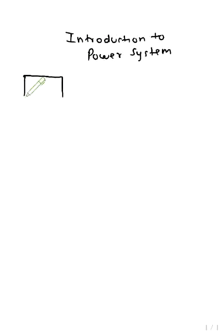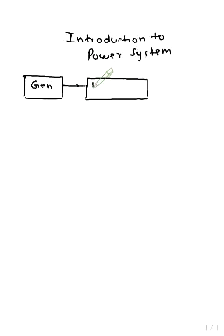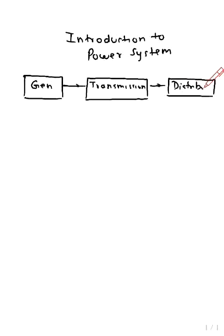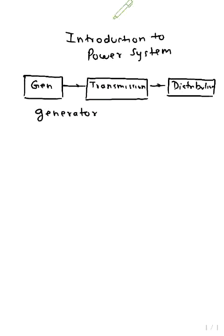Introduction to power systems. We will see the classification of power systems. There are three phases: first is generation, then transmission, then distribution.